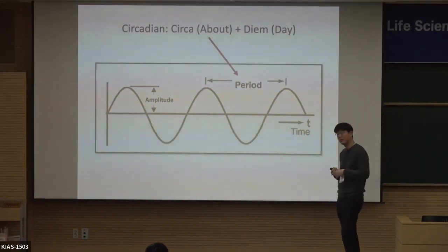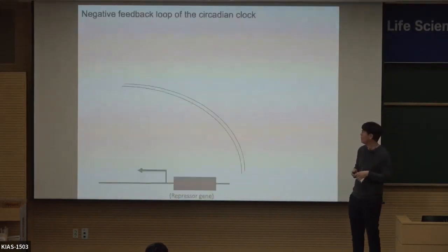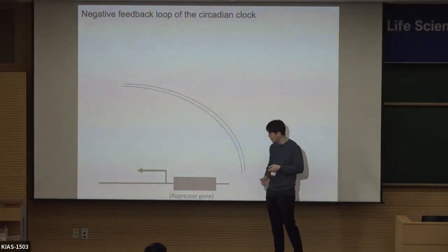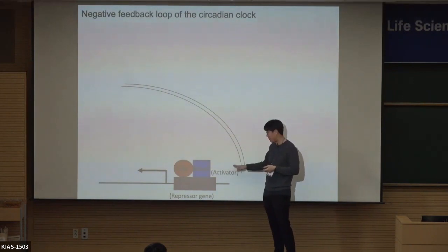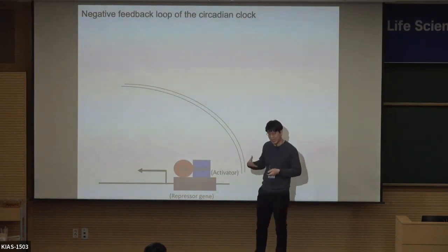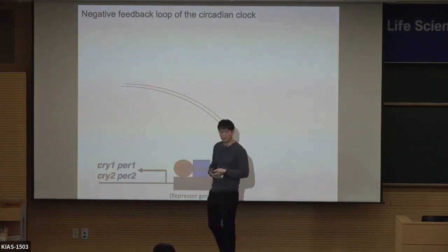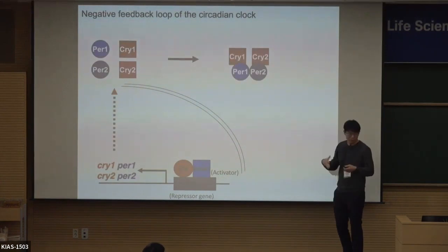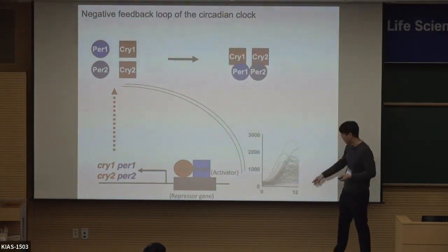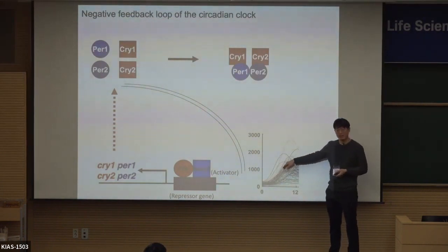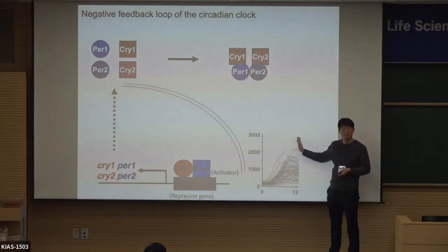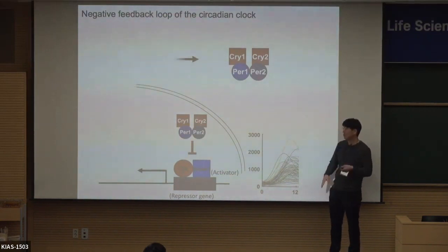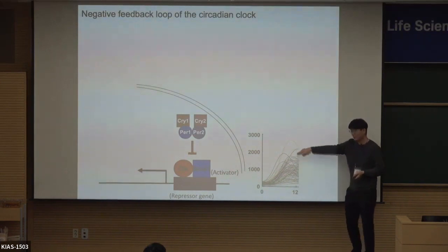How these 24-hour rhythms are generated in our body is via a transcriptional and translational negative feedback loop. There is a so-called period gene. When CLOCK/BMAL1 activated protein binds to this period gene, it is activated, triggering expression of period mRNA. They are translated to protein in the cytoplasm — this happens over about 12 hours, so the period protein level keeps increasing. After 12 hours, they enter the nucleus where they inhibit CLOCK/BMAL1, so that transcription is now stopped and the increase of period protein is halted.